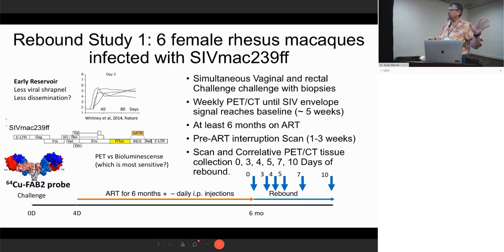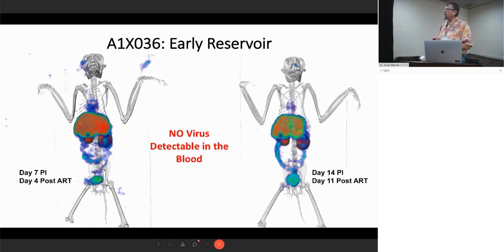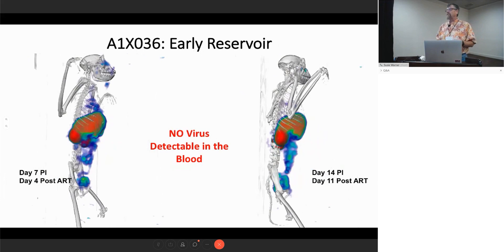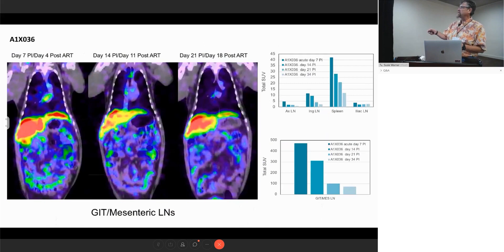The thing I want to talk about now is our studies of rebound. We're looking at the early reservoir. We start ART, do a very high dose vaginal and rectal challenge simultaneously with biopsies, then start ART on day four, watch the decline of signal, and after six months do a series of rebounds. Here's an example: one week after challenge you can see a very large signal in the guts, the second week that persists, and like others have reported with early reservoirs, we really don't see any virus detectable in the blood.